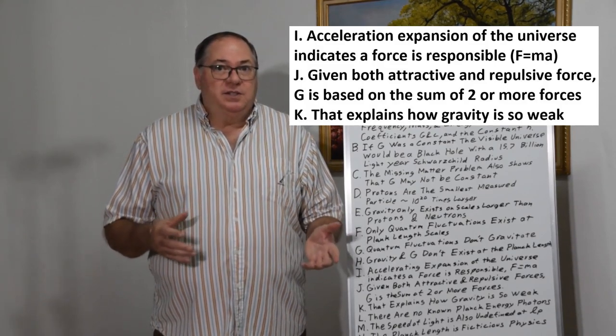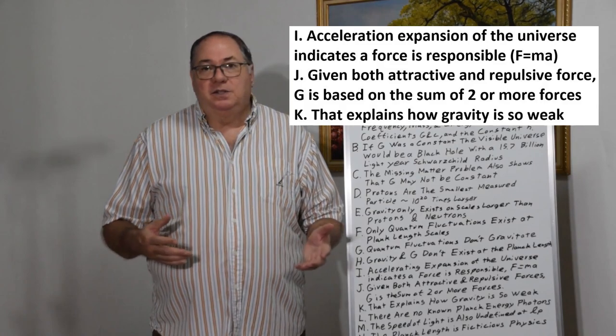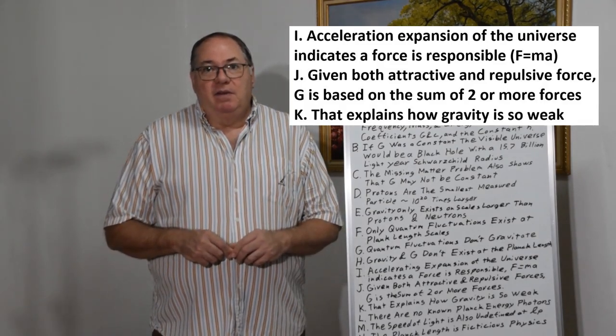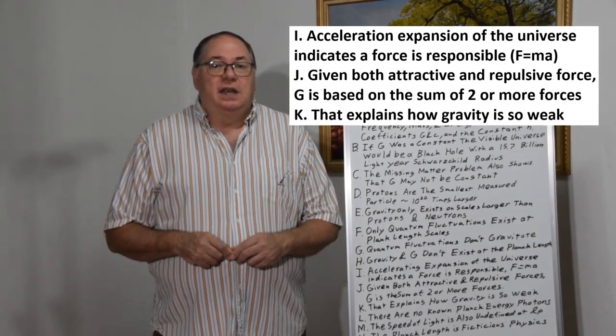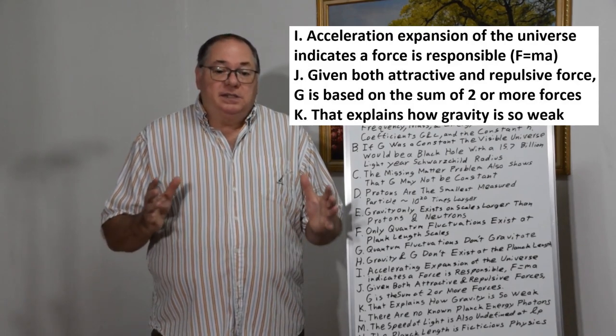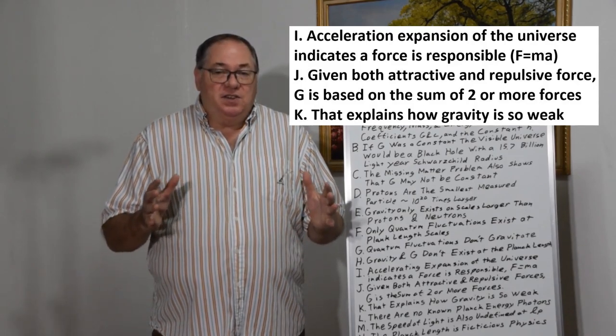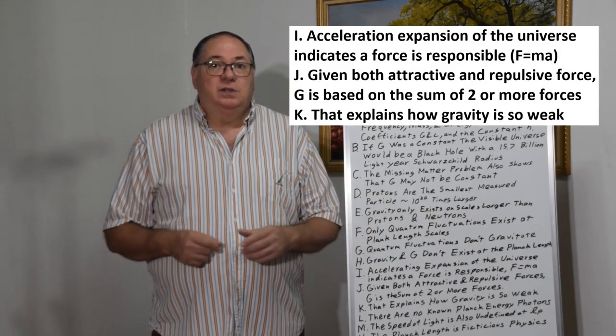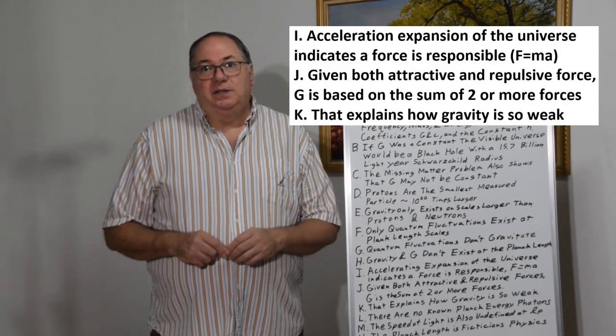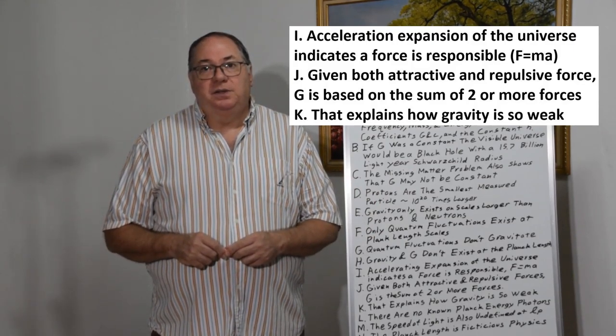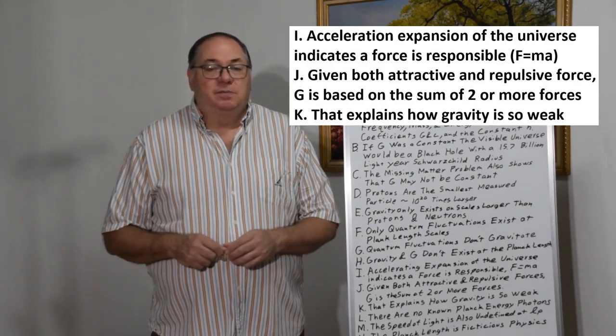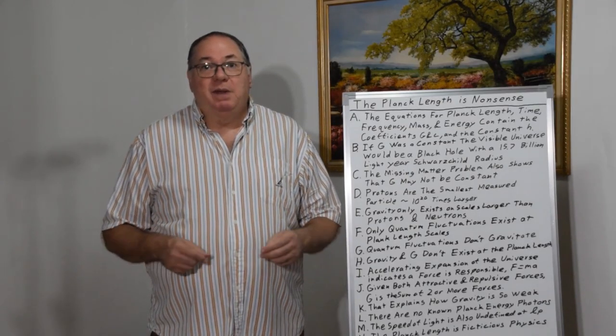In fact, once we understand gravity better, it will be understood that G never was a constant. And plus, since G is the difference of two opposing force terms, that explains why G is so small compared to electromagnetic forces, almost 40 orders of magnitude smaller.